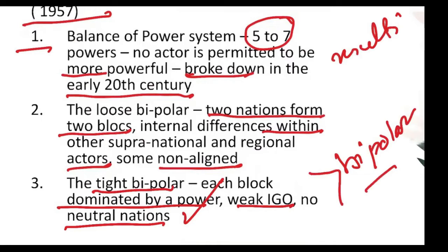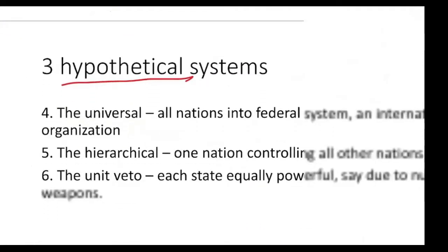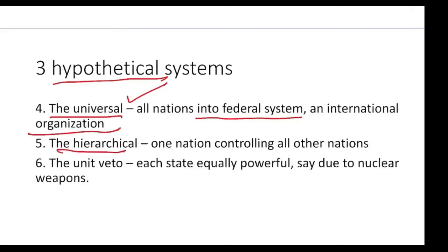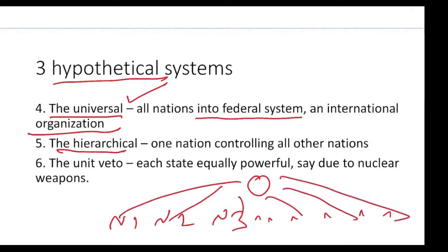Then he proposed three more systems. These are hypothetical systems — the world has not seen anything like this. One is the universal system, in which all nations come into a federal system with an international organization, similar to a world government. Next, the hierarchical system, where one nation controls all other nations. This also nobody has seen.